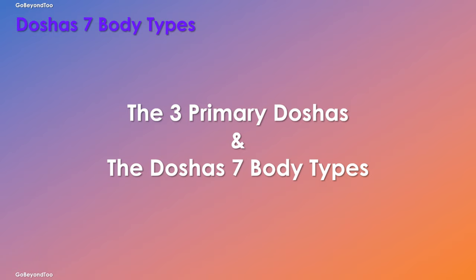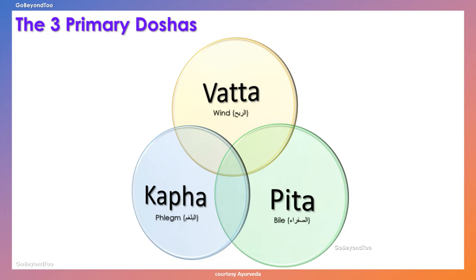Let's take a look at the three primary doshas and the seven body types. The three primary doshas are vata, pitta, and kapha as we explained before. But there is an overlap between them. That overlap creates not just three body types, but seven body types.